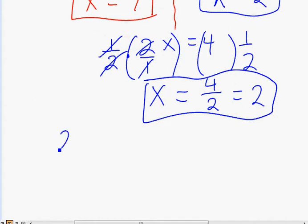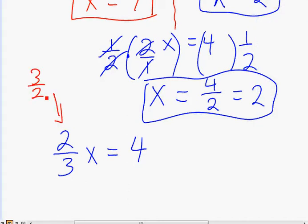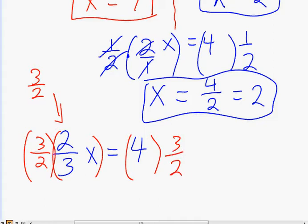For example, 2 thirds x equals 4. Over here, we have a fraction in front of the x. If we divide by 2 thirds, you can still get the same answer, but it's going to be a little more complicated. An easier way is to use the reciprocal and multiply by it. Well, the reciprocal of 2 over 3 is going to be 3 over 2, right? We're just flipping the top number and the bottom number. So we multiply both sides by the reciprocal, 3 over 2.